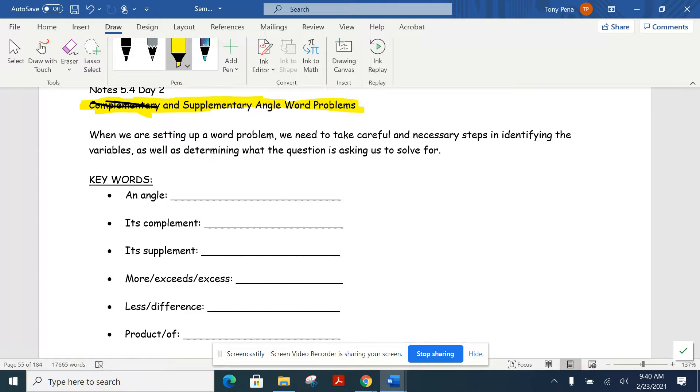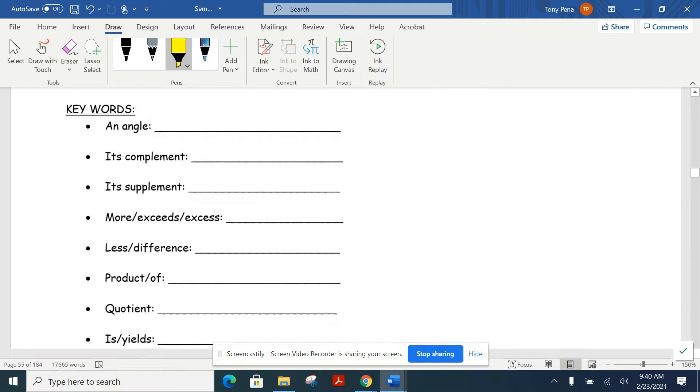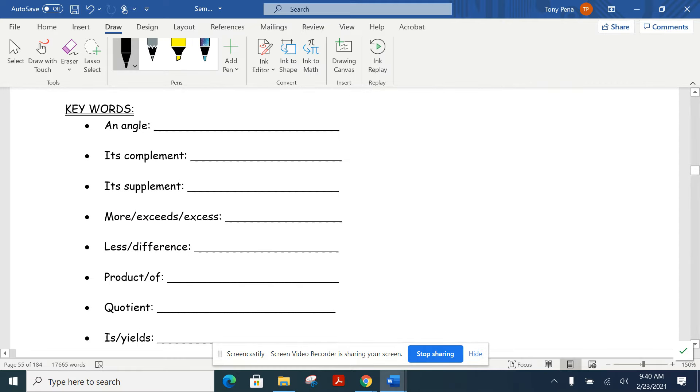It says 5-4, day two. What we did the other day is change complementary and supplementary angles. We're just going to expand on that using some words, some word problems. So when we're setting up a word problem, we need to be careful in the necessary steps and identifying the variables as well as determining what the question is asking for. So we're going to throw some things down here. A lot of times when we're talking about an angle, some of the words or the big word you're going to see is the measure. It starts talking about the measure of an angle that usually corresponds to an angle.